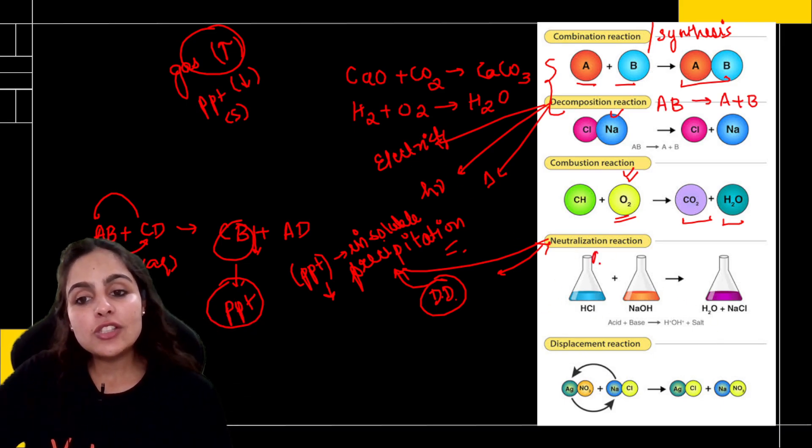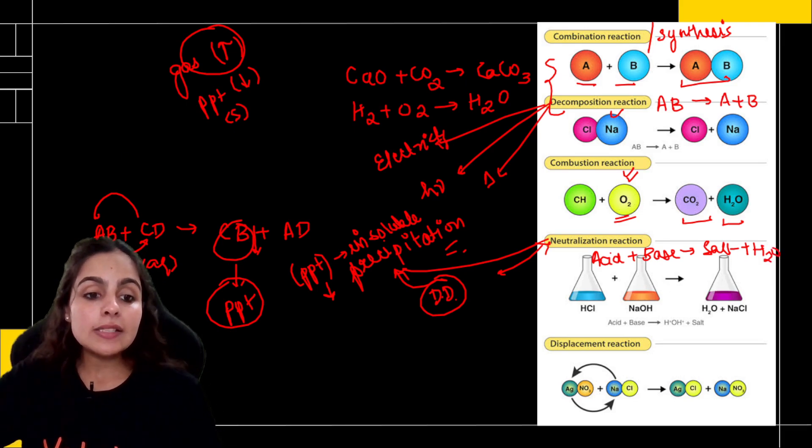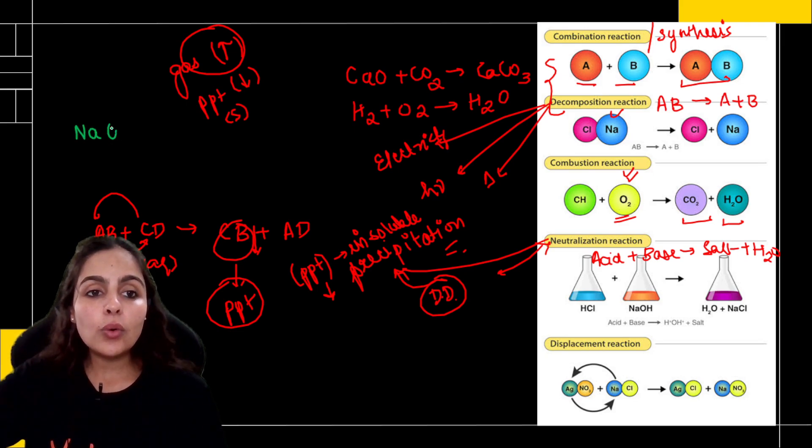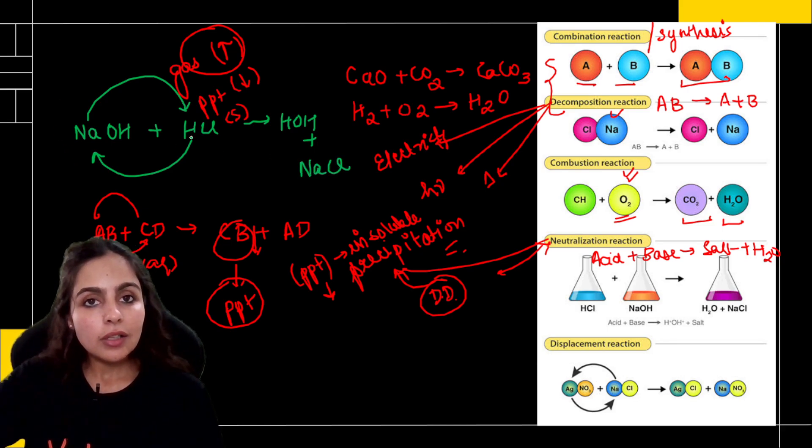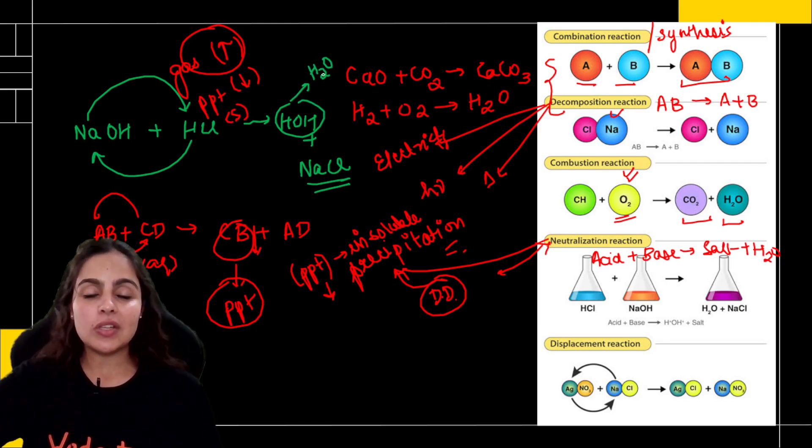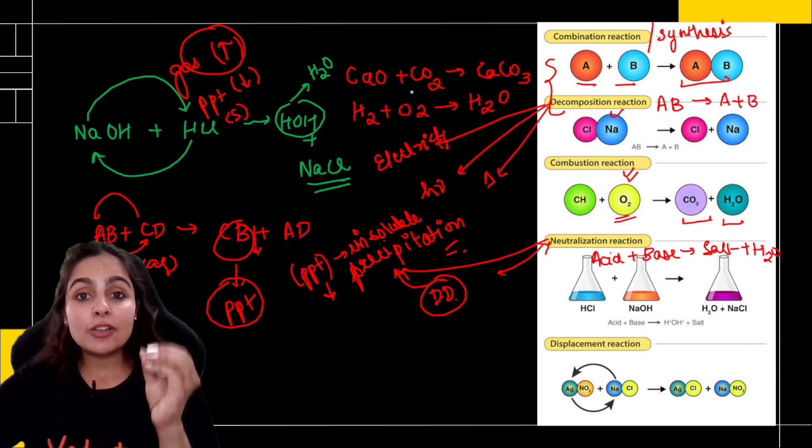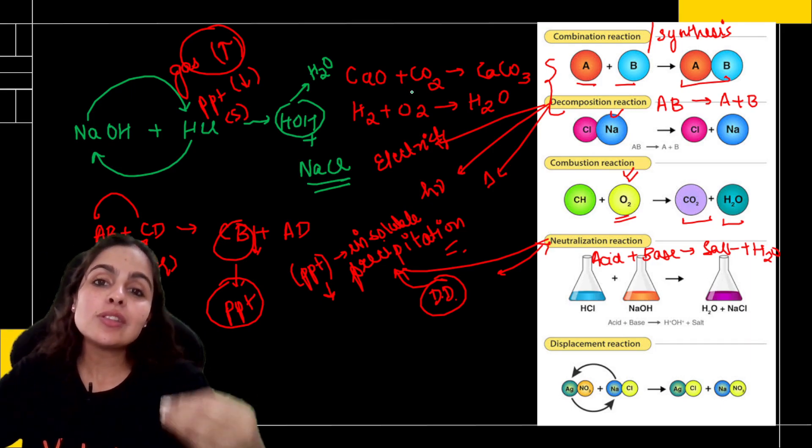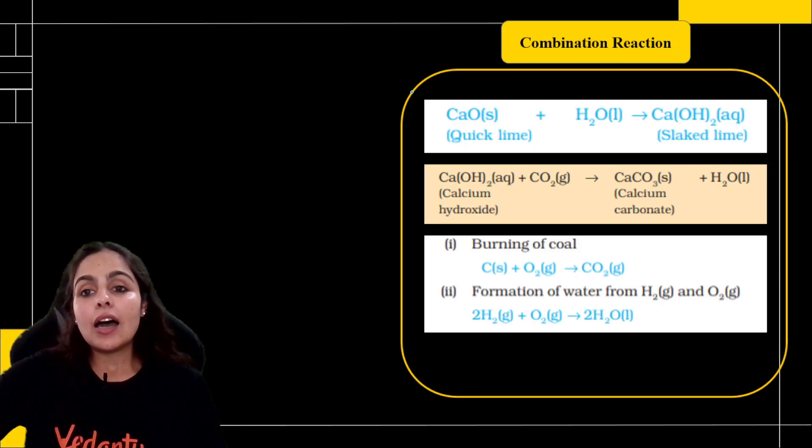Now, neutralization happens where acid reacts with base and that will result into salt and water. This is also double displacement. For example, if you don't see double displacement here, look here. NaOH is base, acid is HCl. H will take place of Na. What will it form? H-O-H plus Na will take place of H. What will it form? NaCl. Exchange happened. NaCl plus H-O-H. H-O-H is nothing but water, H2O. It is also double displacement, but here precipitate formation is not happening.